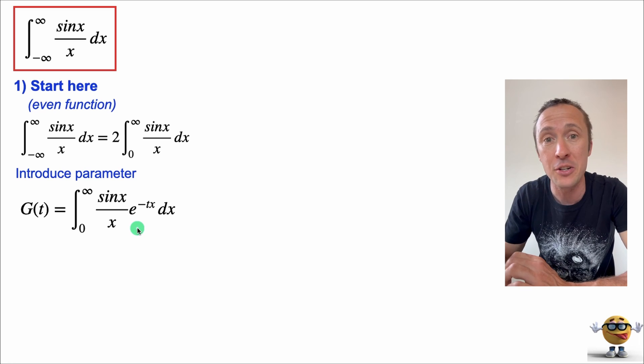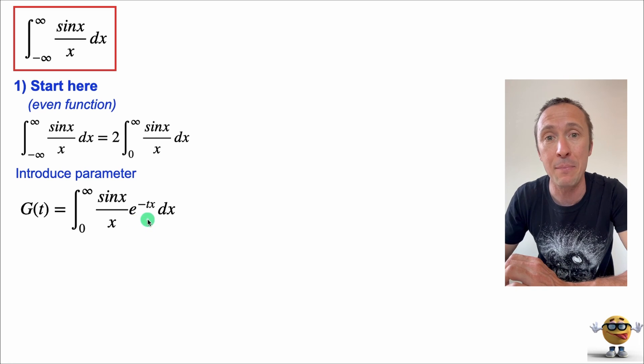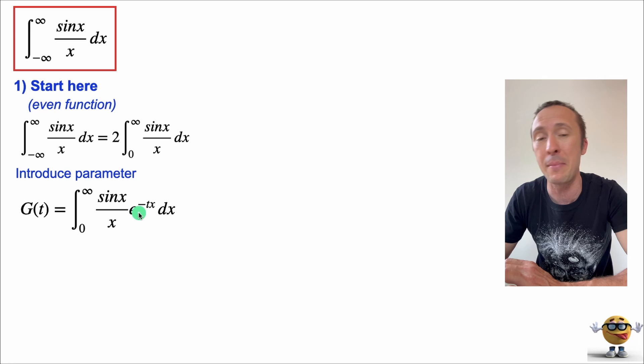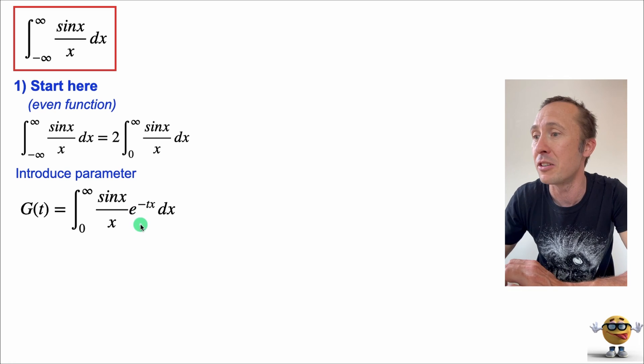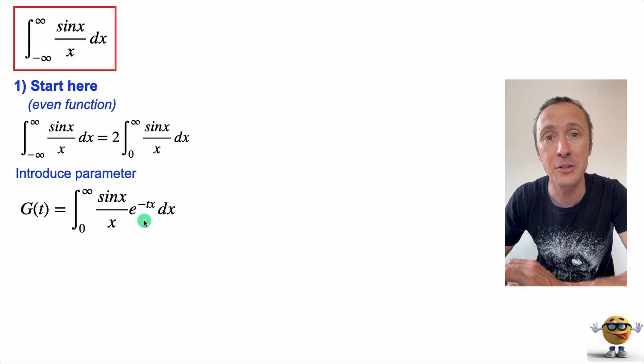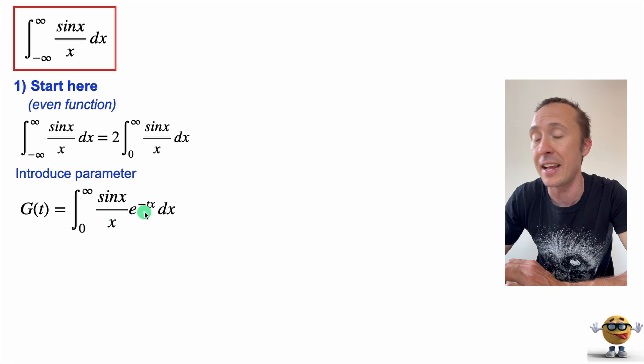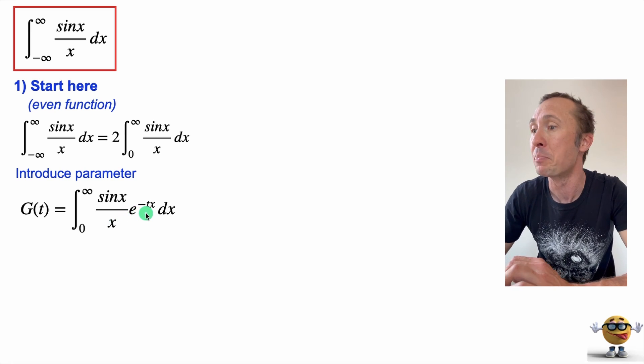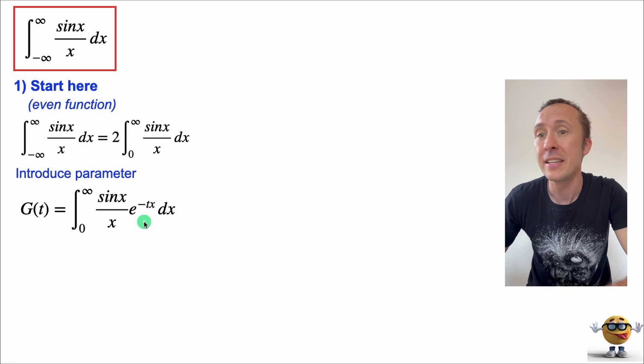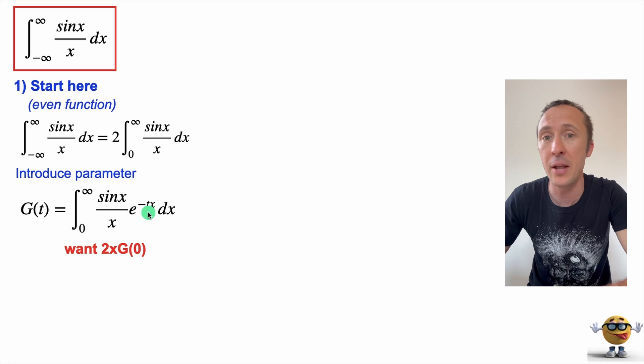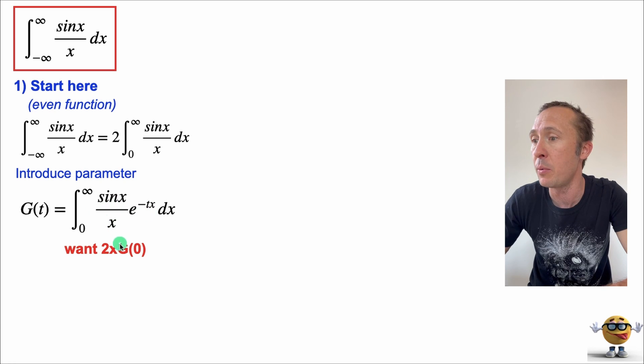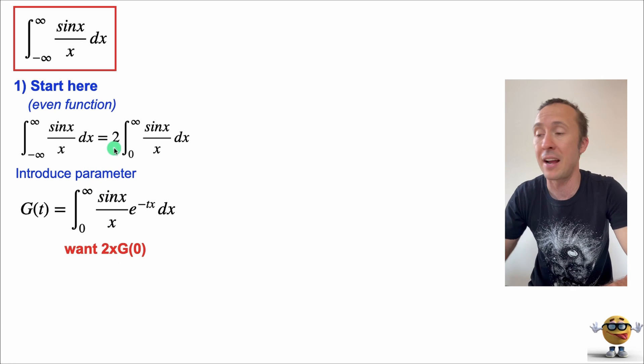When you have other integrals, we might not insert the same thing, e to the negative tx. You may be creative. It might be t squared or divided by t, or sometimes it might be trial and error to determine which is the right parameter to introduce, but for this integral, it's e to the negative tx, and I'll show you why. Now what we want is g of zero, right? So when t is zero, then we have the integral that we want. So we want g of zero because that's this integral right here. And if we know that, then we double it, and that's our integral, and that's our answer.